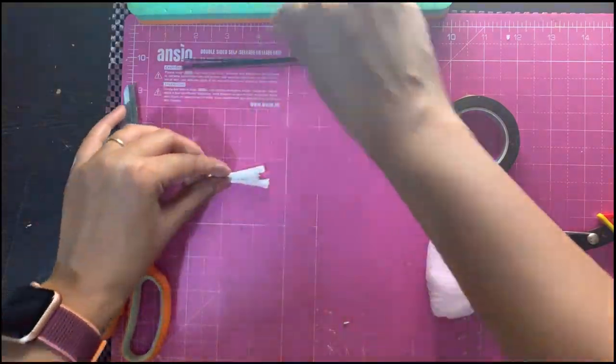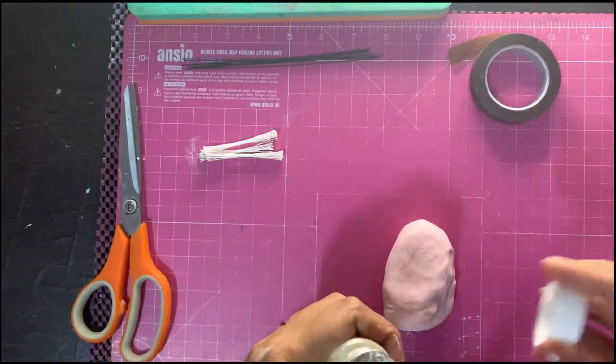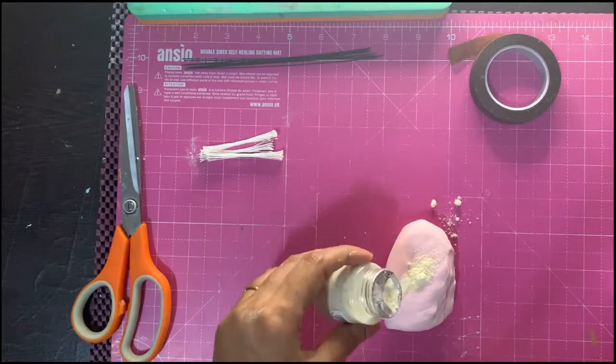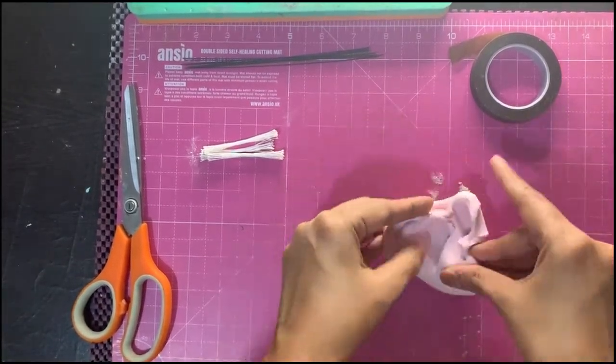Now here I have taken very light pink fondant to make the pink cherry blossoms. You can take any color. I am going to add a little Tylose powder to the pink fondant. This will make the flowers hold shape.